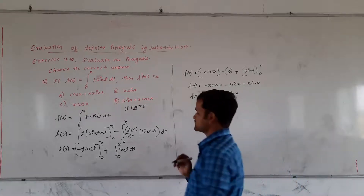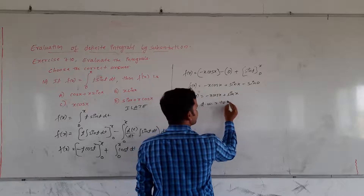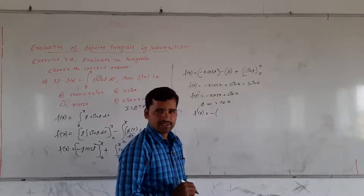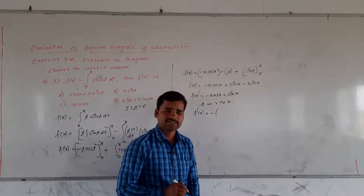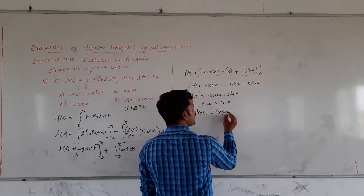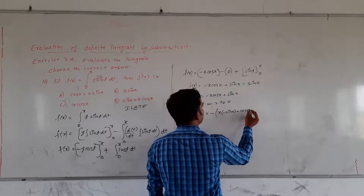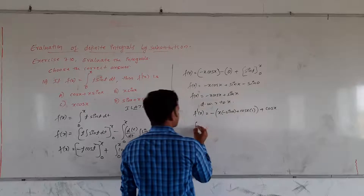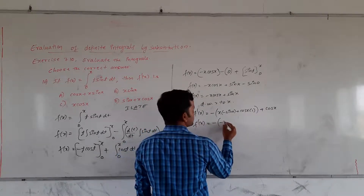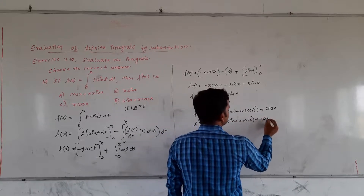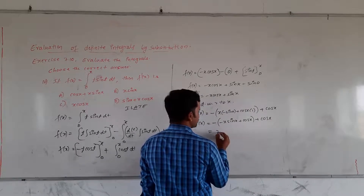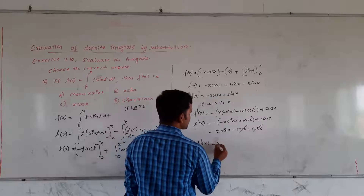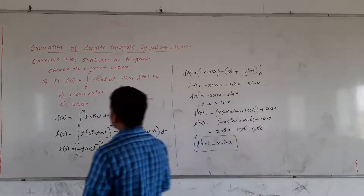They asked to find f'(x), so we need to differentiate. Differentiating with respect to x: f'(x) equals minus [applying the product rule — x as it is, times differentiation of cos x is minus sin x, plus cos x as it is, times differentiation of x is 1] plus differentiation of sin x is cos x. So f'(x) equals minus [minus x · sin x plus cos x] plus cos x, which gives plus x · sin x minus cos x plus cos x. These two cancel, so f'(x) equals x · sin x. Option B is correct.